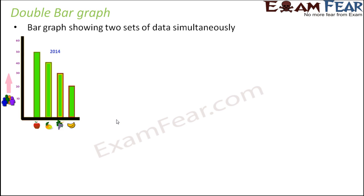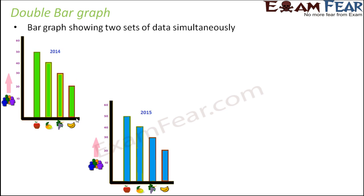Let us look at this example. A survey was conducted in a class in 2014 about the favorite fruits of different children, and this was the result of that survey. In 2014 it was found that apple is the most liked fruit and banana is the most disliked fruit. The same survey was conducted again in 2015, and that time again apple was the most liked fruit.